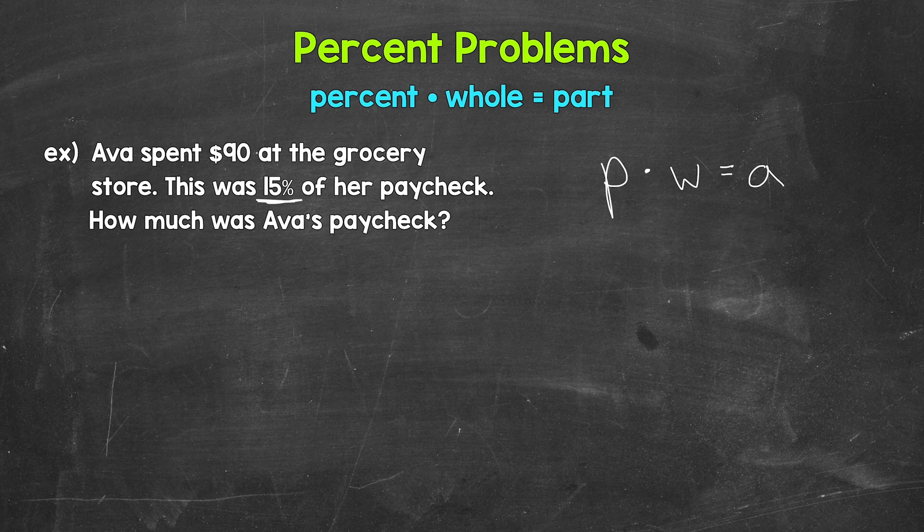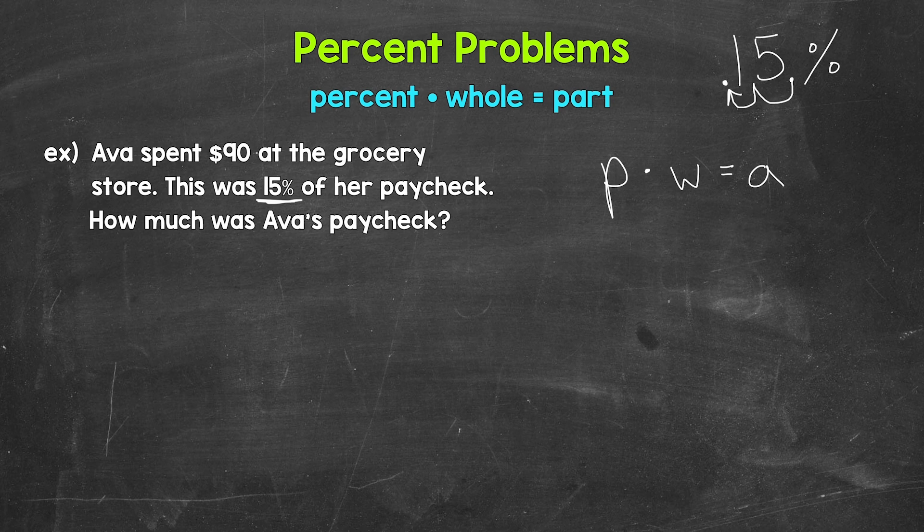The decimal comes after a whole number. So for 15%, the decimal goes right here and we move it once, twice to the left. So we get 0.15, 15 hundredths. So let's plug that in for percent times the whole equals the part.